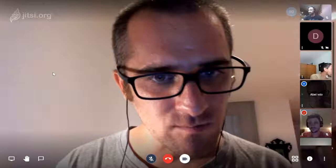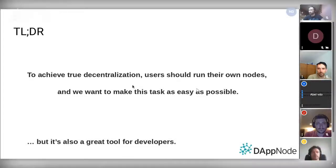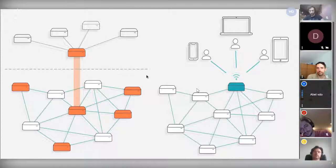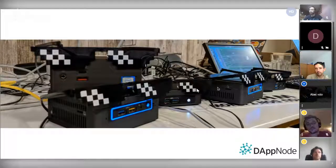Let's start with the DAPnode introduction. The TLDR is that we want to achieve true decentralization — to make it as easy as possible for everyone to run a node at home. It's also a tool for developers, since many services we run are used by developers. We want to avoid the situation on the left, where people use decentralized networks in a centralized manner with one bottleneck. What we want is the situation on the right: you have a node, you share it with friends, co-workers, or other dapps, and everything is fully distributed with no centralized bottlenecks.